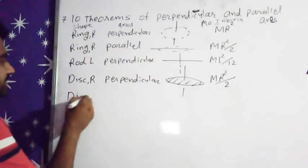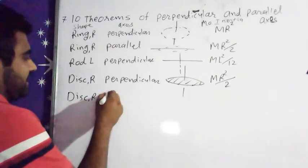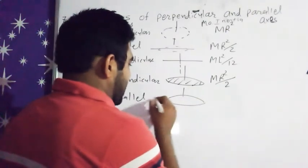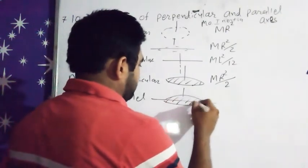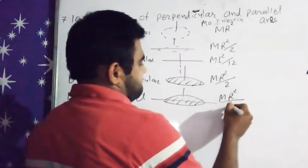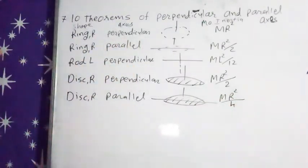Again disc R, now parallel. So axis is just passing through the diametrical point of disc. So moment of inertia is MR square by 4.